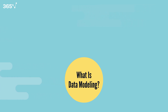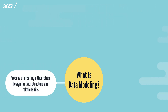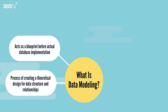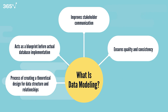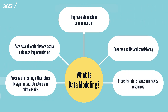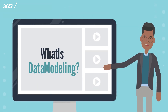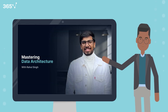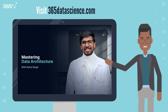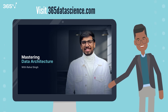Now let's recap the key points we've covered in this lesson. Data modeling is the process of creating a theoretical design for data structure and relationships. It serves as a blueprint before actual database implementation. Data modeling improves communication between stakeholders, ensures data quality and consistency, and saves time and resources by preventing future structural issues. Thanks for joining us in this video on data modeling. Check out our complete data architecture course at 365datascience.com for more in-depth content on building robust data systems.